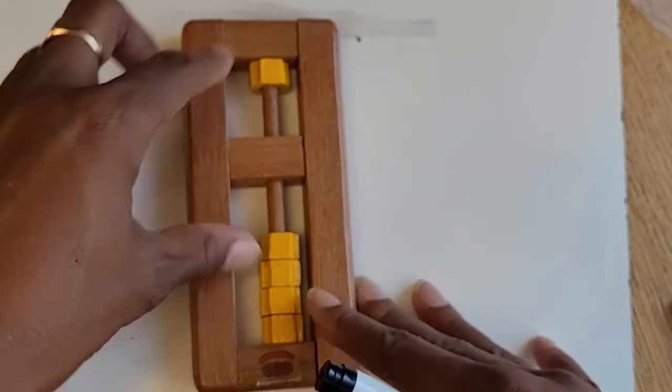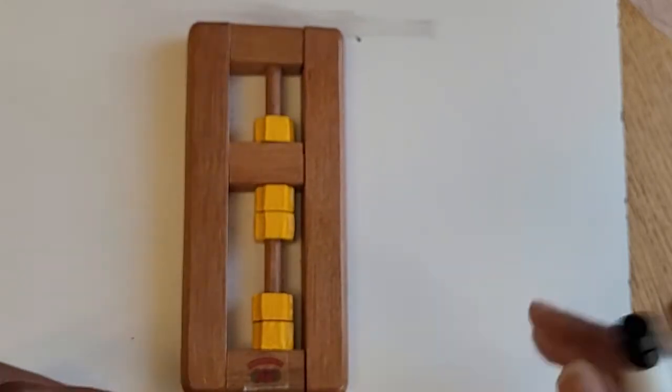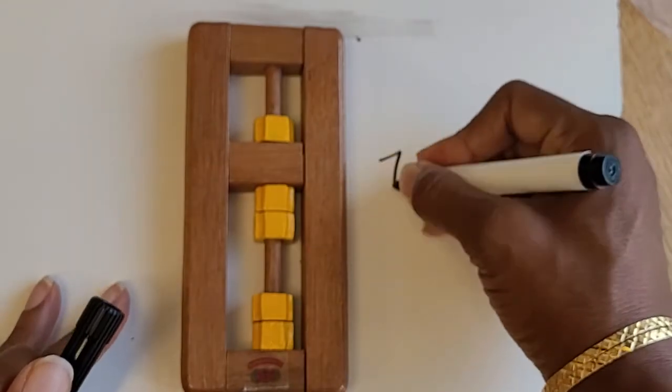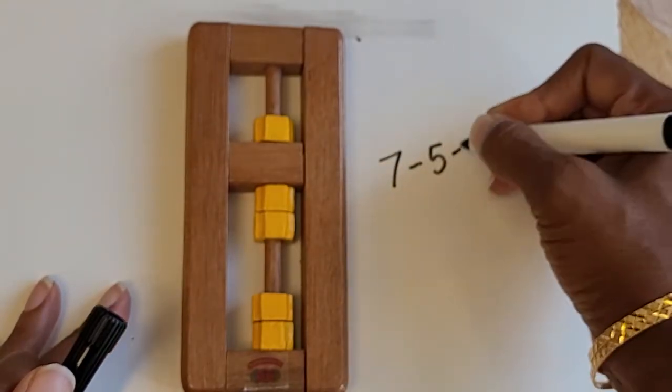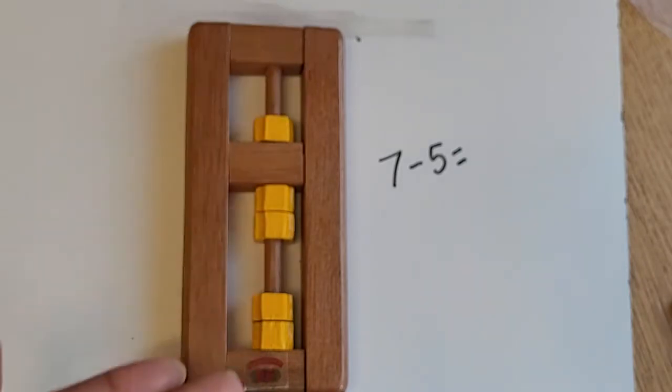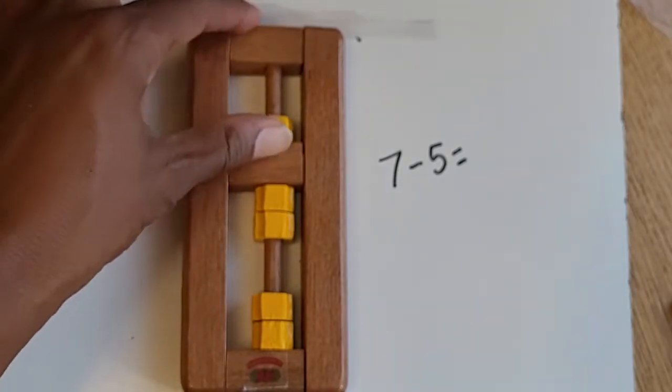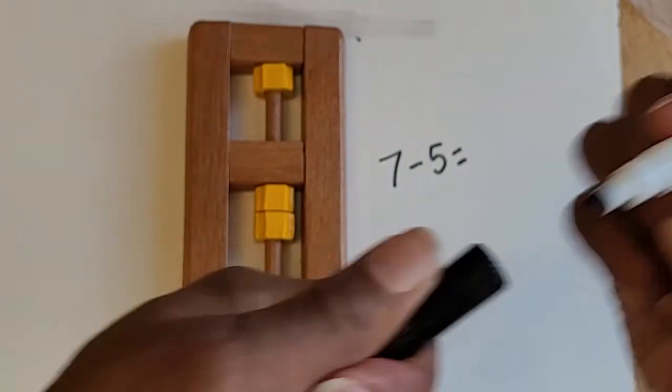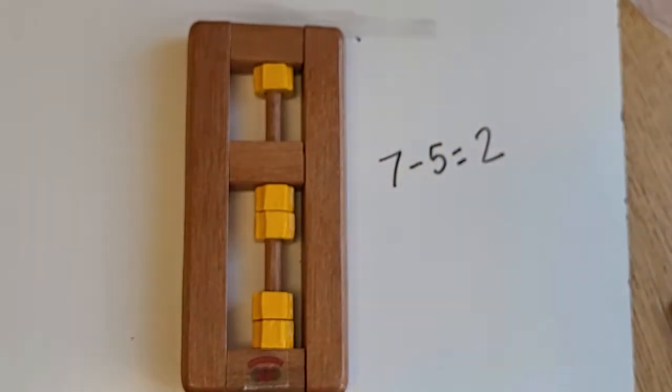So children know how to manipulate the beads to create simple calculations. For example, if I say seven minus five, a child would recognize that this is seven. They would know how to subtract five. They would recognize this place value and they would know that the answer is two.